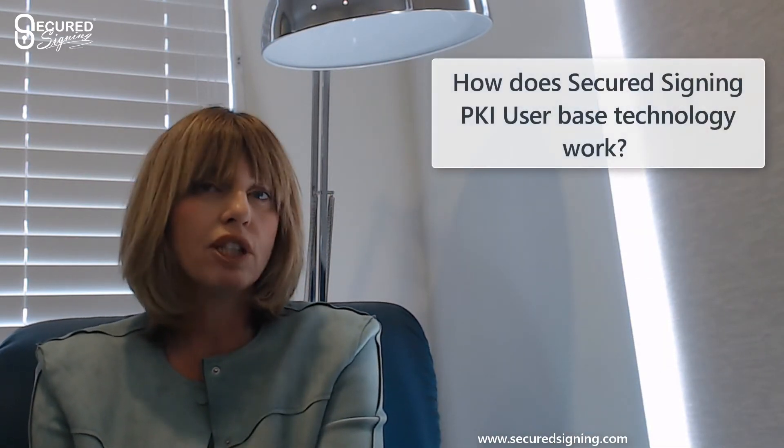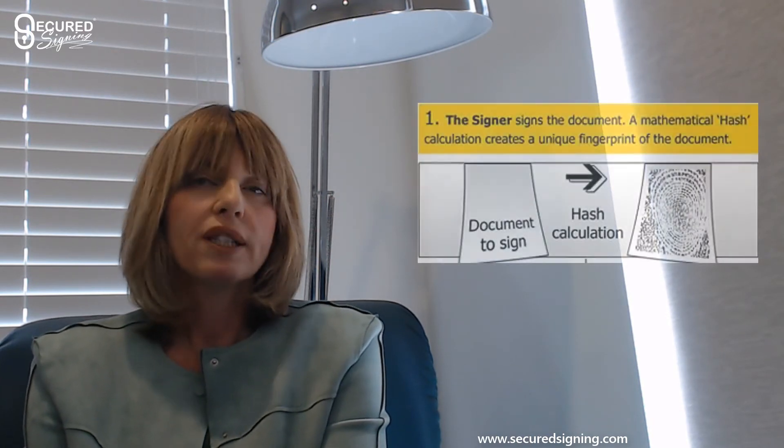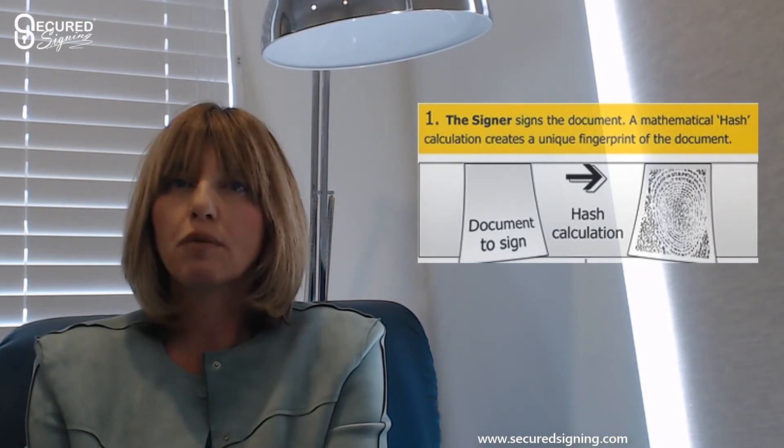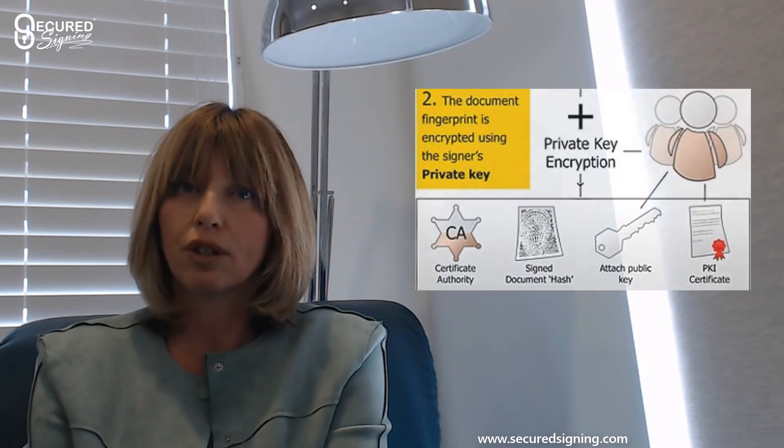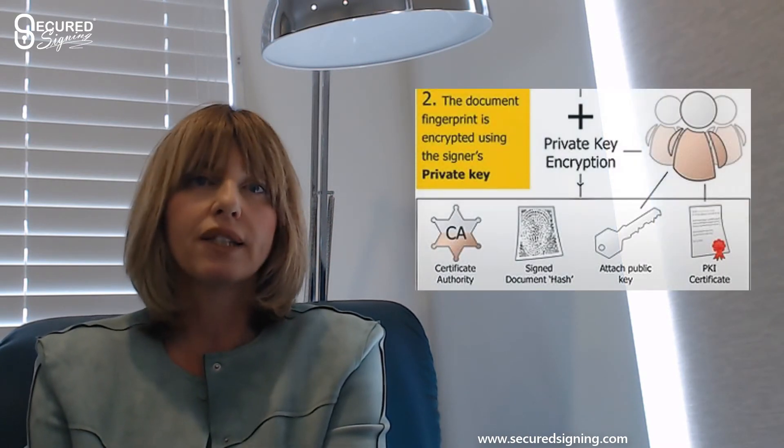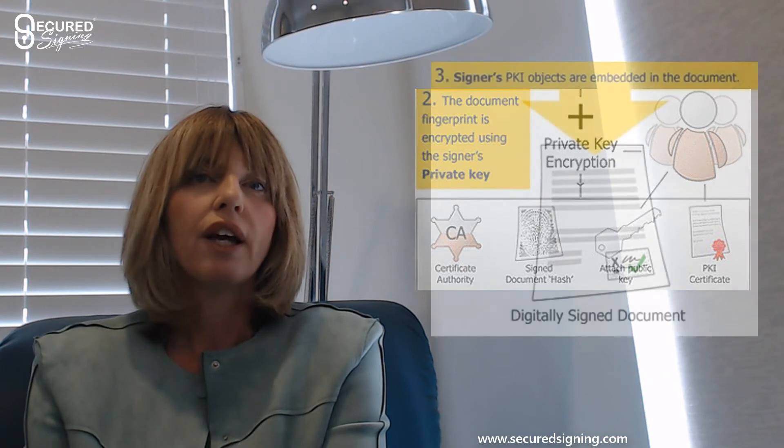We use PKI user-based digital signature technology. We issue two personal signing keys for each signer: a secured private key for signing, and a public certificate key for signature validation. This means the signer's identity is embedded in the signature data. When signing a document in Secured Signing, a unique fingerprint is issued to each document. The signer's private key is encrypted to the document, adding the timestamp and the signer's signature graphical image. This completes the signing process and seals the document.